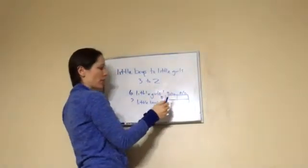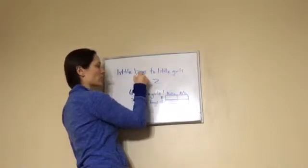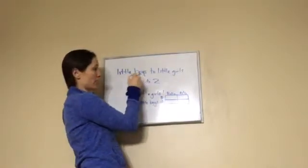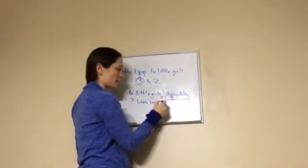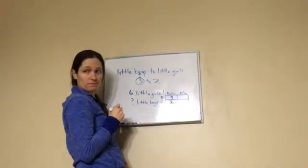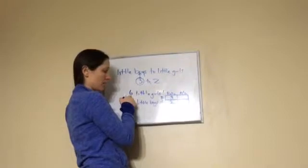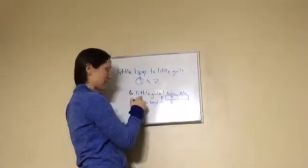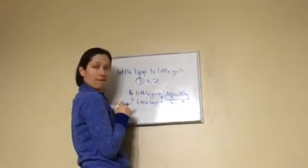Now, what was the ratio? 3 to 2. Whatever they mentioned first is what they mentioned first here. So little boys to little girls, 3 to 2. So you're going to put 3 boys, and in the girls' spot, you're going to put 2 girls. See what I filled in so far? And then the actual count is, I'm going to put 6 little girls, so 6 actual count, okay?